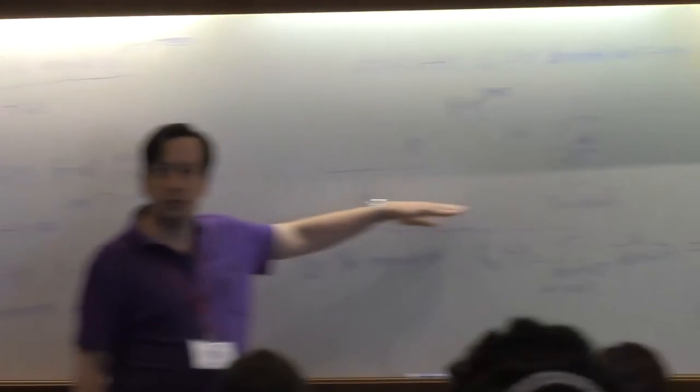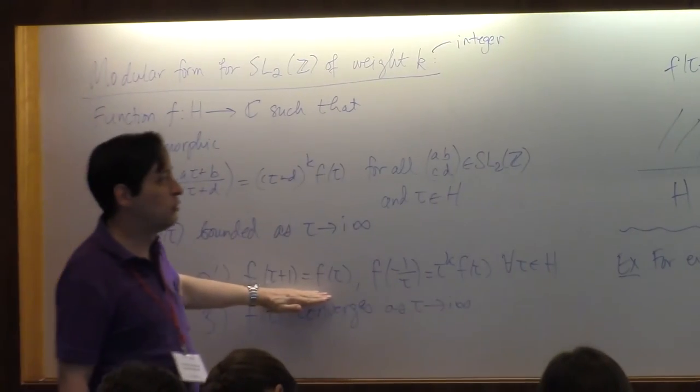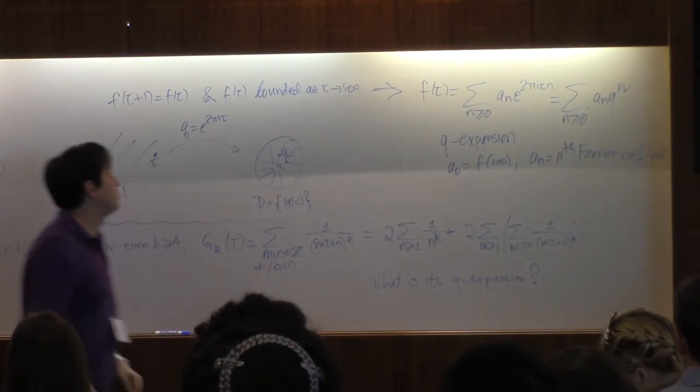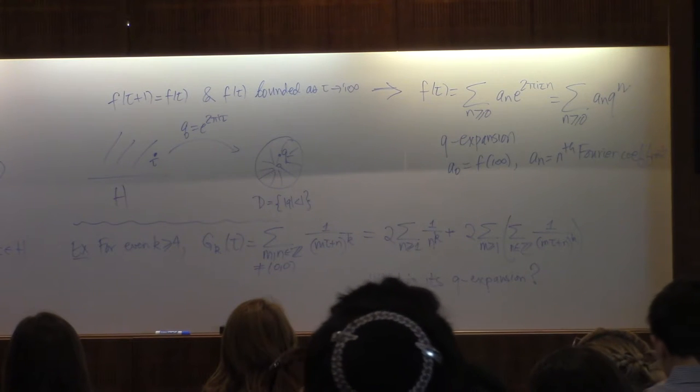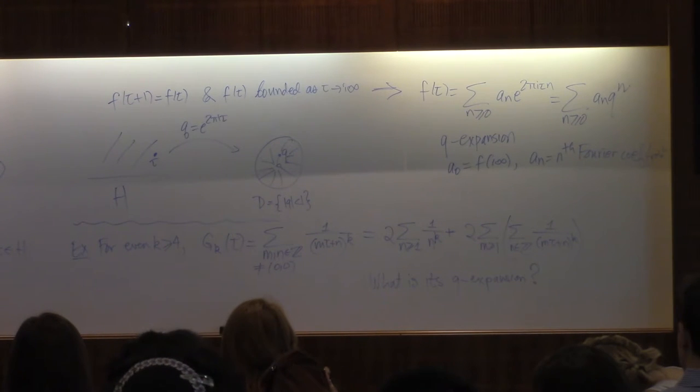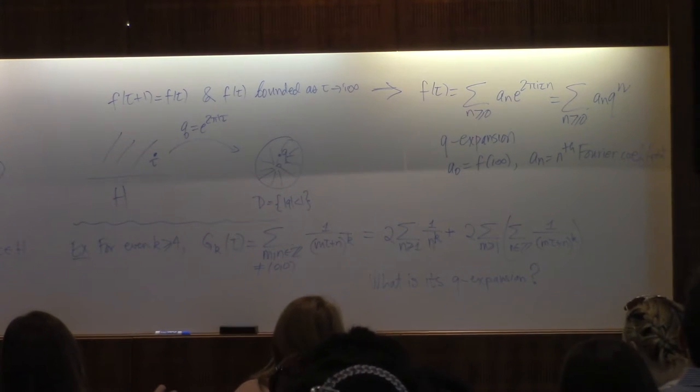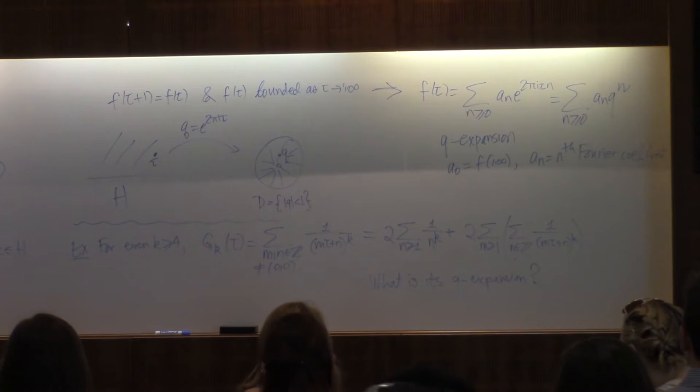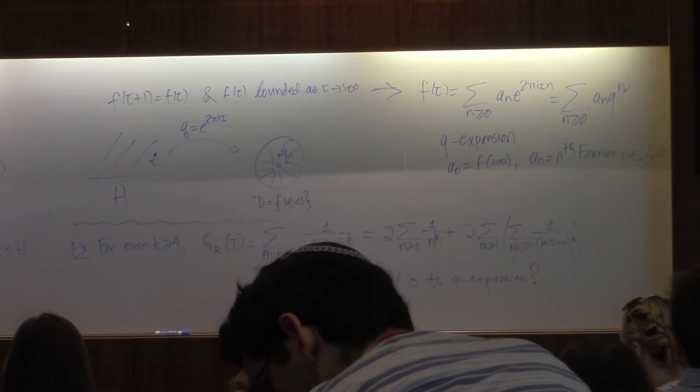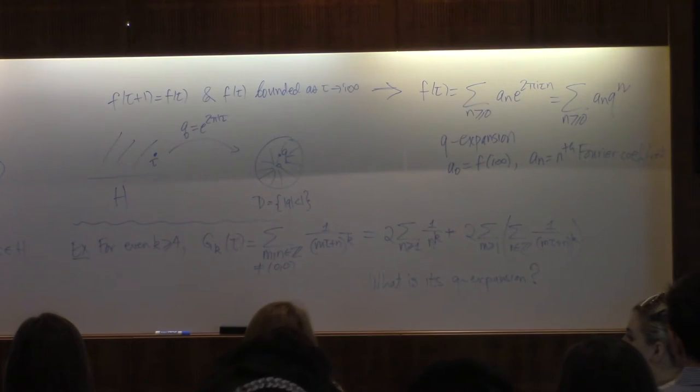And at the end of the previous lecture, I was showing you that from this condition, the modularity condition for the matrix 1, 1, 0, 1, the periodicity and the boundedness near infinity give us a power series representation of every modular form as a series in e to the 2 pi i tau, and this is called a q expansion. We write q for e to 2 pi i tau, and the coefficients of this q expansion are called the Fourier coefficients of the modular form. So if you try to look up tables of modular forms, then you'll find that they're described by their q expansion.